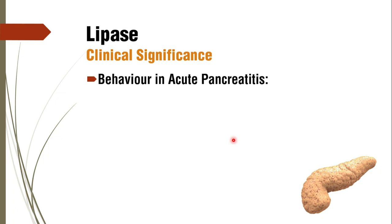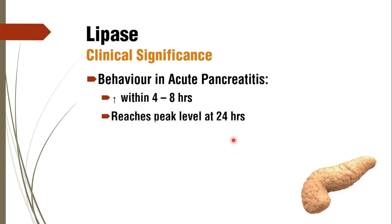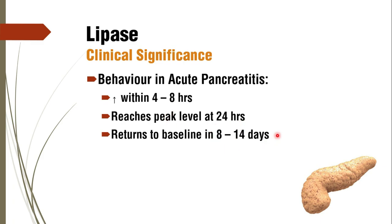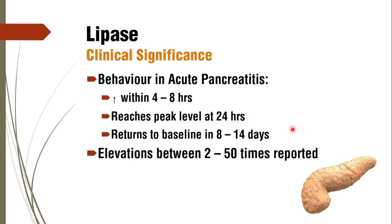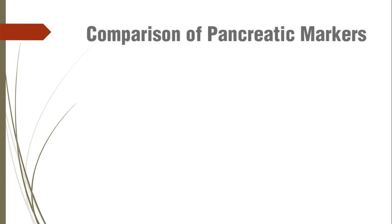Regarding the typical behavior of lipase in acute pancreatitis: it starts increasing within 4 to 8 hours — almost similar to amylase — reaches peak level at 24 hours, and returns to baseline in 8 to 14 days. Elevations of 2 to 50 times are reported. The ratio of pancreatic concentration to serum level is 20,000 to 1, so even a small pancreatic pathology produces a vast increase in serum lipase activity.